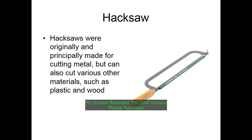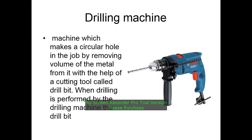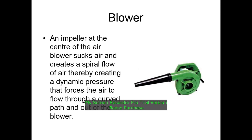A drilling machine makes a circular hole in a job by removing material from the metal with the help of a cutting tool called a drill bit. When drilling is performed by the drilling machine, the drill bit is employed at the center. There is also an air blower.